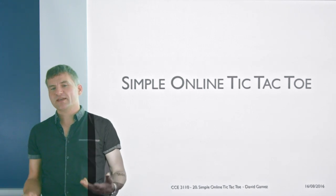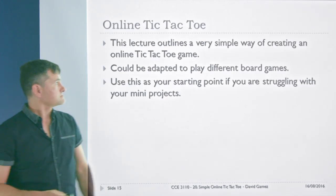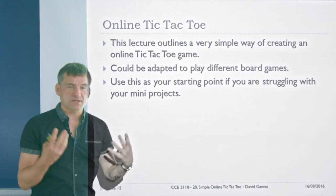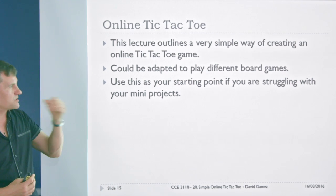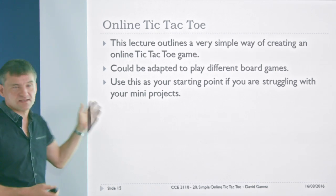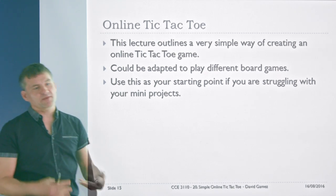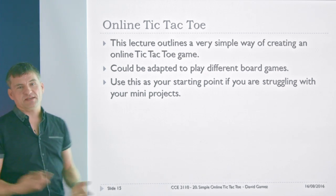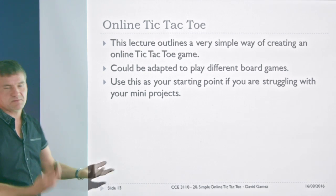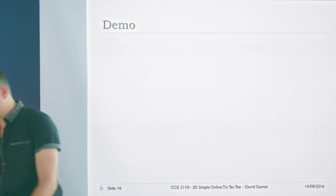Now I'll show you how you can build an online game that enables two people on two separate computers to play online tic-tac-toe. The point of this is to give you a framework you can adapt for different board games. If you're struggling with your mini-projects and don't know where to start, this is the place. Understand this simple tic-tac-toe code, then think of a board game to adapt it for — snakes and ladders, Scrabble, whatever. You can use exactly the same approach with a more complex game. The main thing you have to change is the board class.